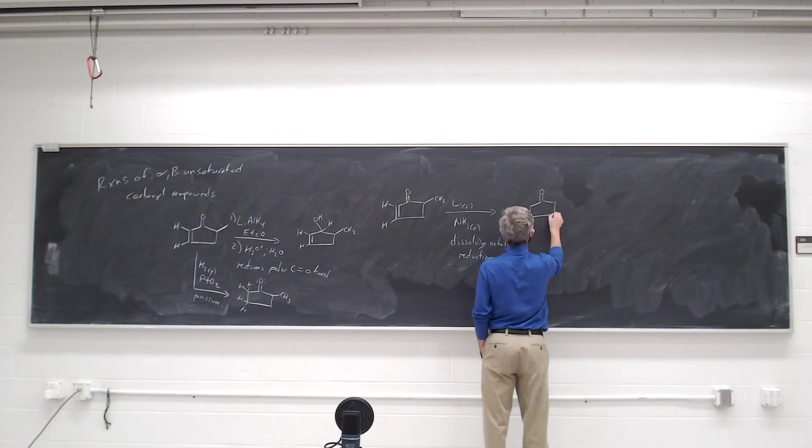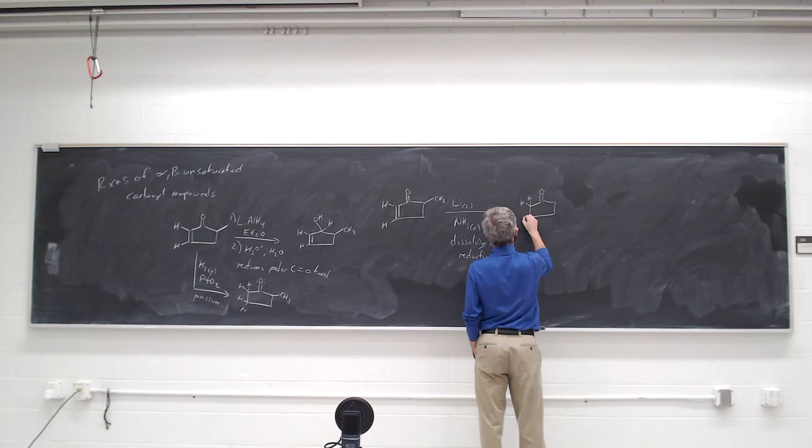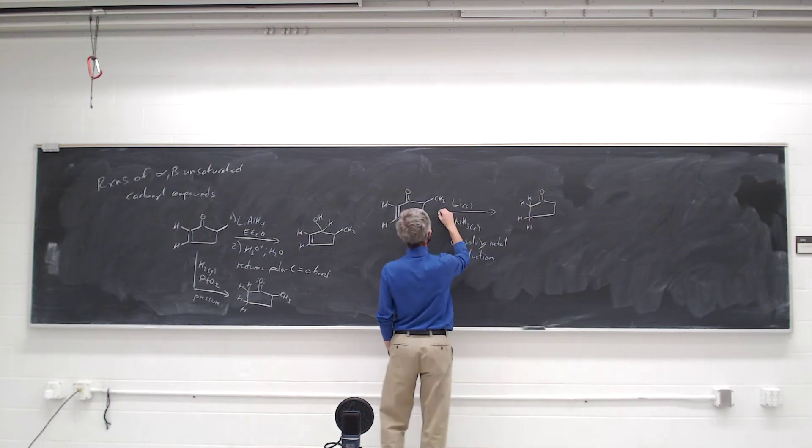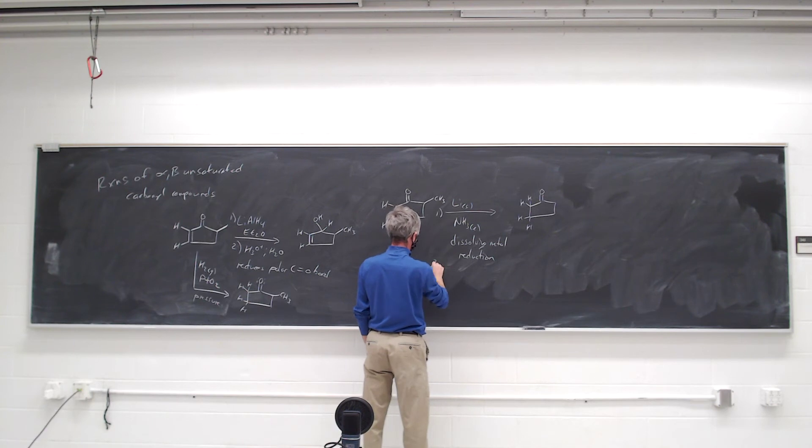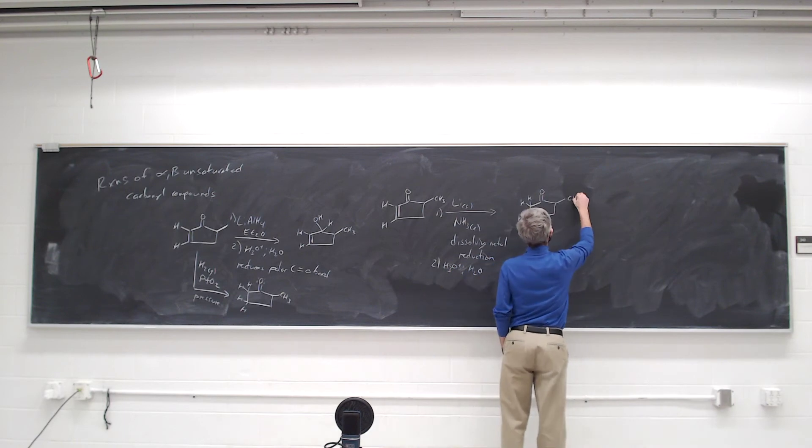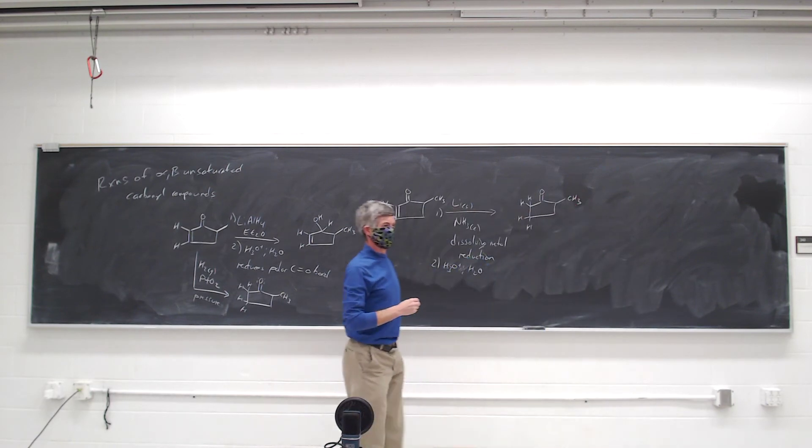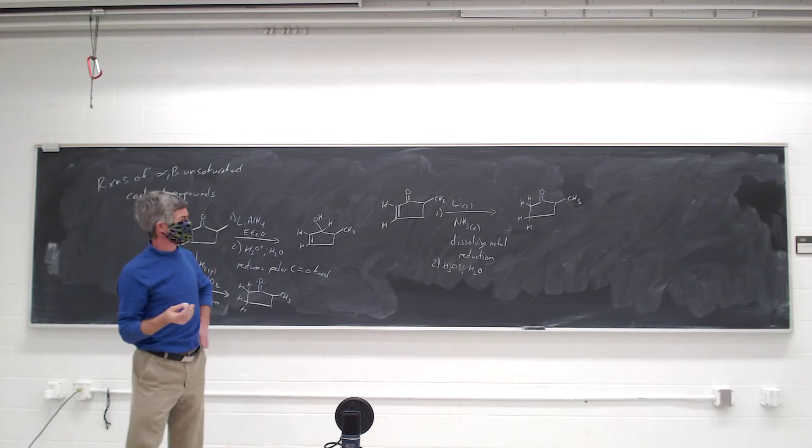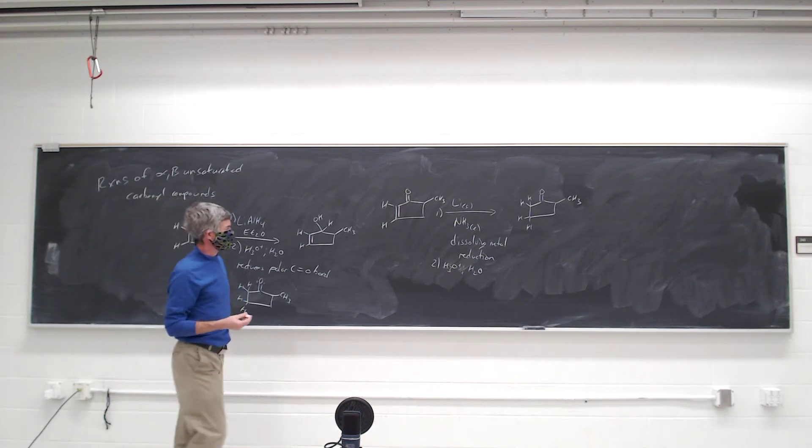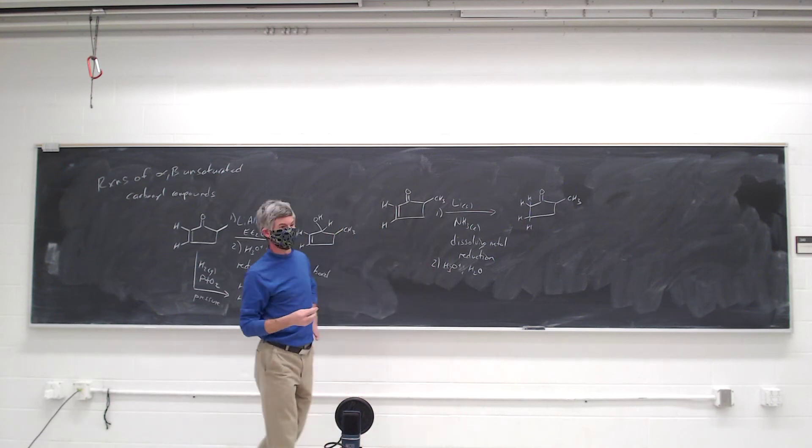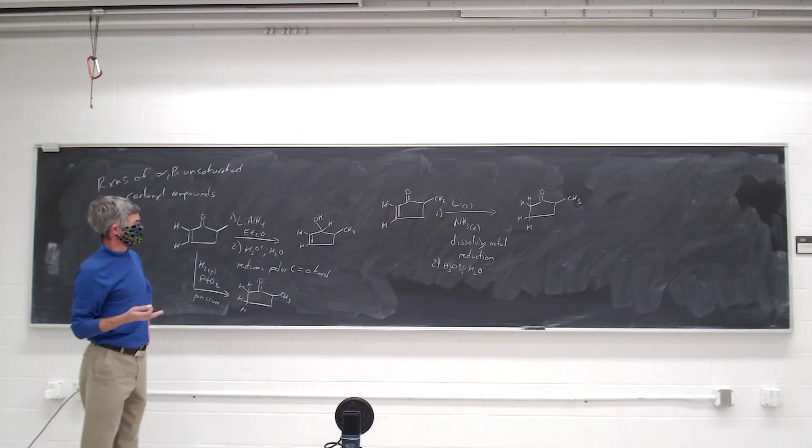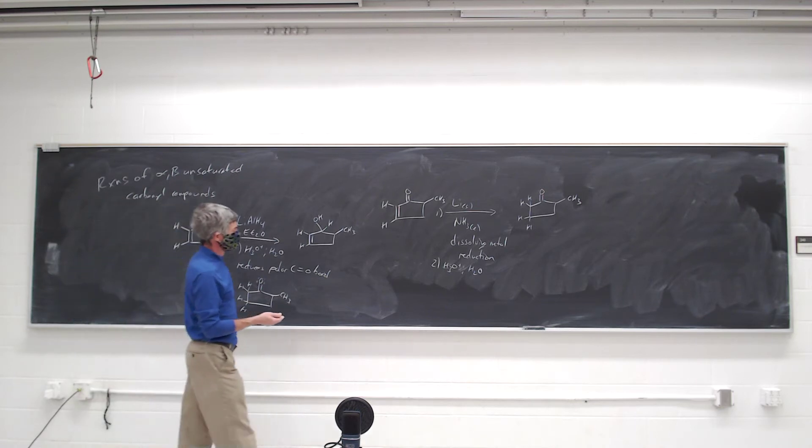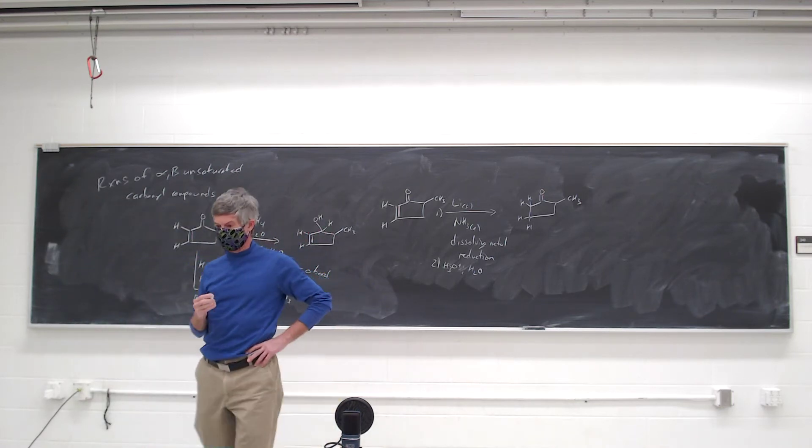And it will, in the end, after aqueous acid workup, have reduced the carbon-carbon double bond. Normally that doesn't happen, right? We've used the dissolving metal reduction in the past to reduce an alkyne selectively to a trans-alkene. And the trans-alkene doesn't react further. We've also used the dissolving metal reduction to reduce disulfides. So what's the mechanism by which this reaction causes the reduction of the carbon-carbon double bond? That's what we have to think about.